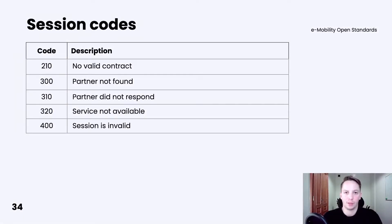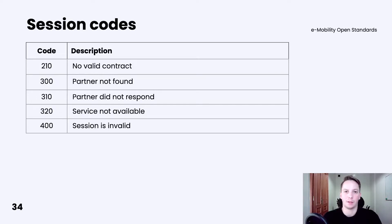Then we have session-related codes. Importantly, these are not codes related to the charging session itself, but to the session mechanism. So we may specify that there is no valid contract, that a partner is not found, that a partner did not respond, that the service is unavailable, or that the session is invalid.